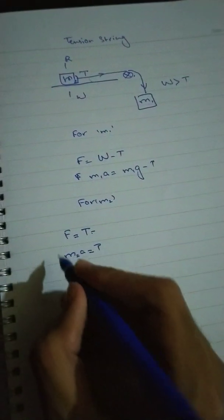Now M1 A is equal to M1 G minus T, and M2 A is equal to T. Acceleration and tension.